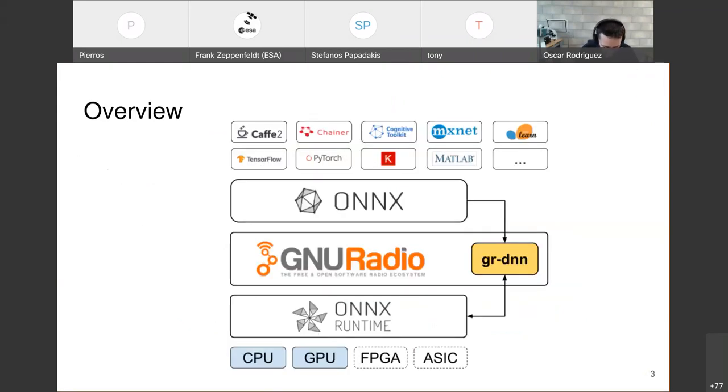The first part of the project was to analyze the different tools that we could use to carry out this task, and we ended up deciding to use ONNX and the ONNX runtime. Basically, what we developed was an out-of-tree module for GNU Radio that uses the ONNX runtime for inference and supports the ONNX format. This is because the ONNX format is an interoperable framework for deep learning and machine learning.